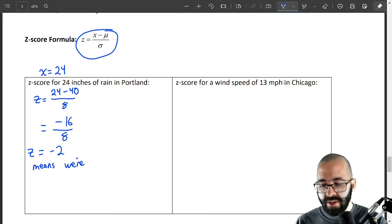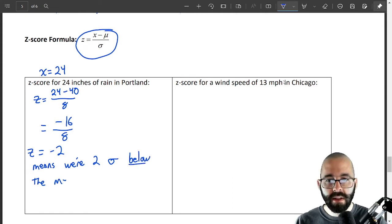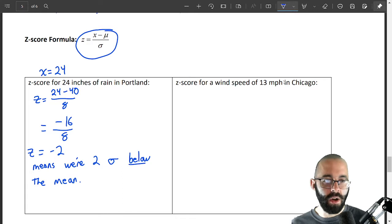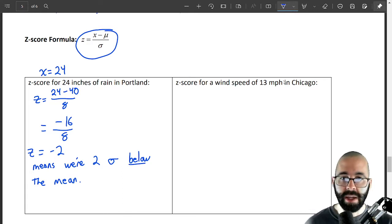we're two standard deviations below the mean. Negative just means you're below the mean, positive above the mean.